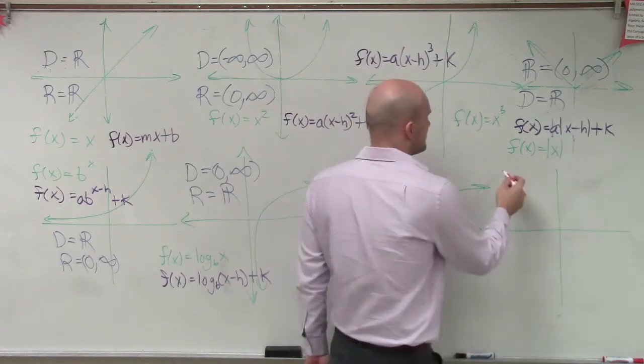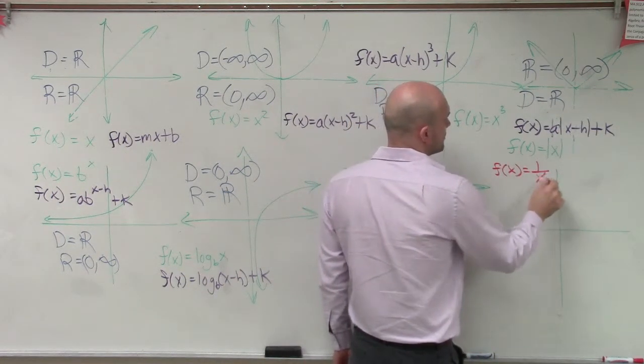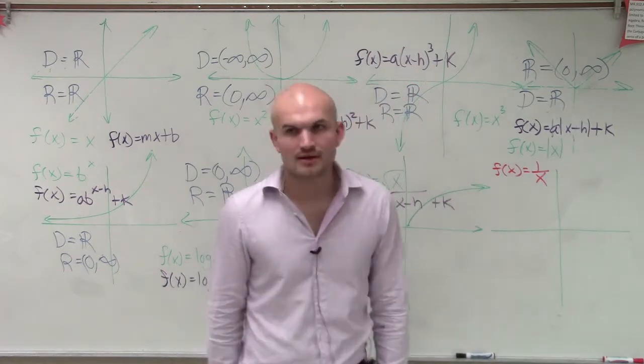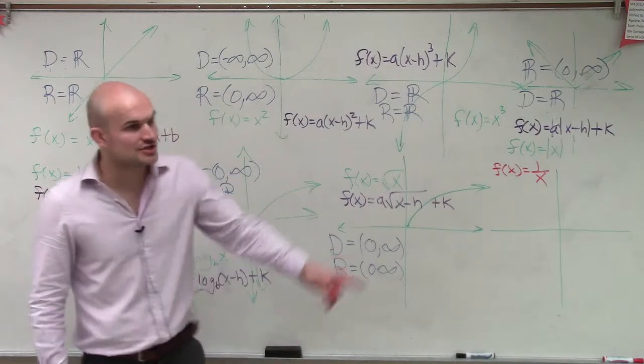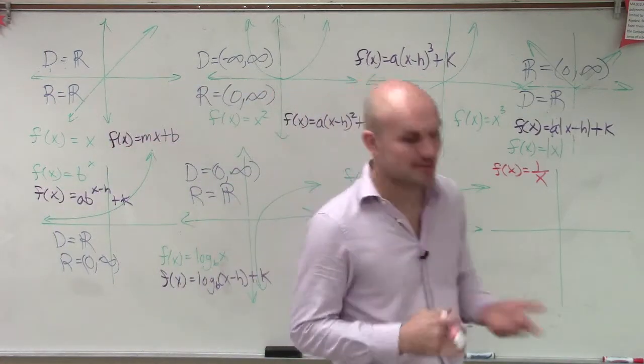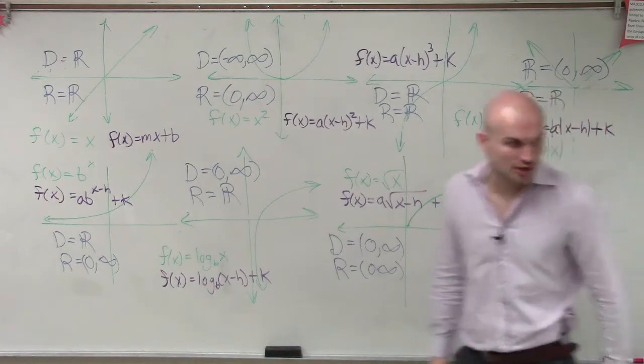Our final function is the reciprocal of our identity function. So it takes the form of this, f of x equals 1 over x. And since it takes the reciprocal of our original function, it actually takes the name the reciprocal function.